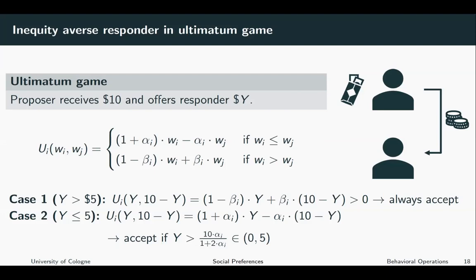Which means inequity aversion can explain that low offers are rejected and assuming that responders are heterogeneous, it also explains that the probability of an offer being accepted is growing in the size of the proposal. For all proposals that offer less than half of the pie, it also implies that all offers which are greater than half of the pie should be accepted.